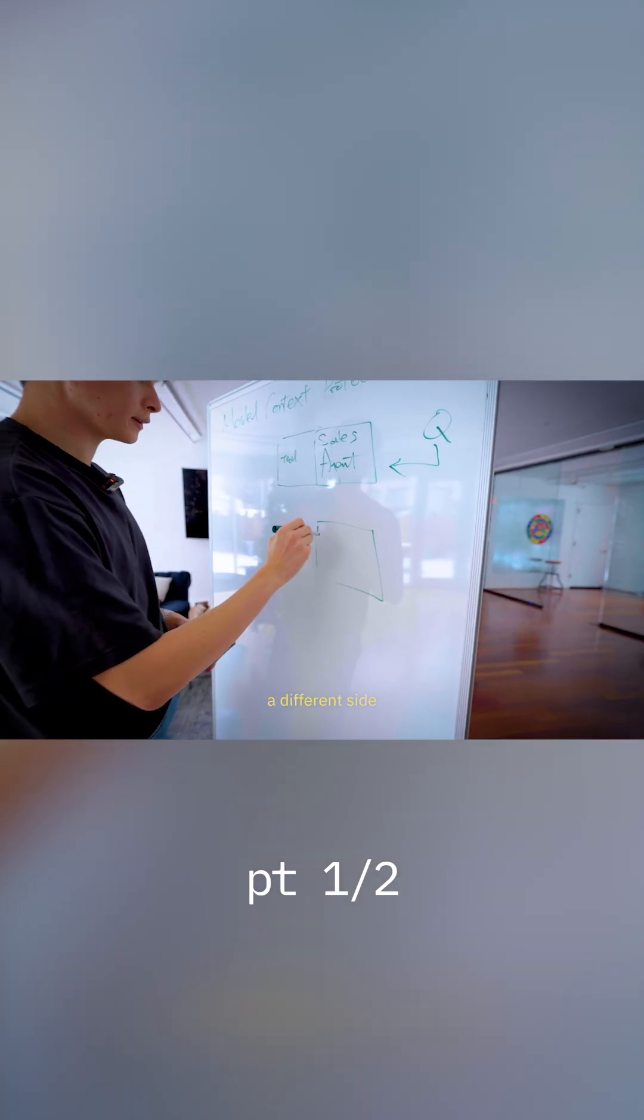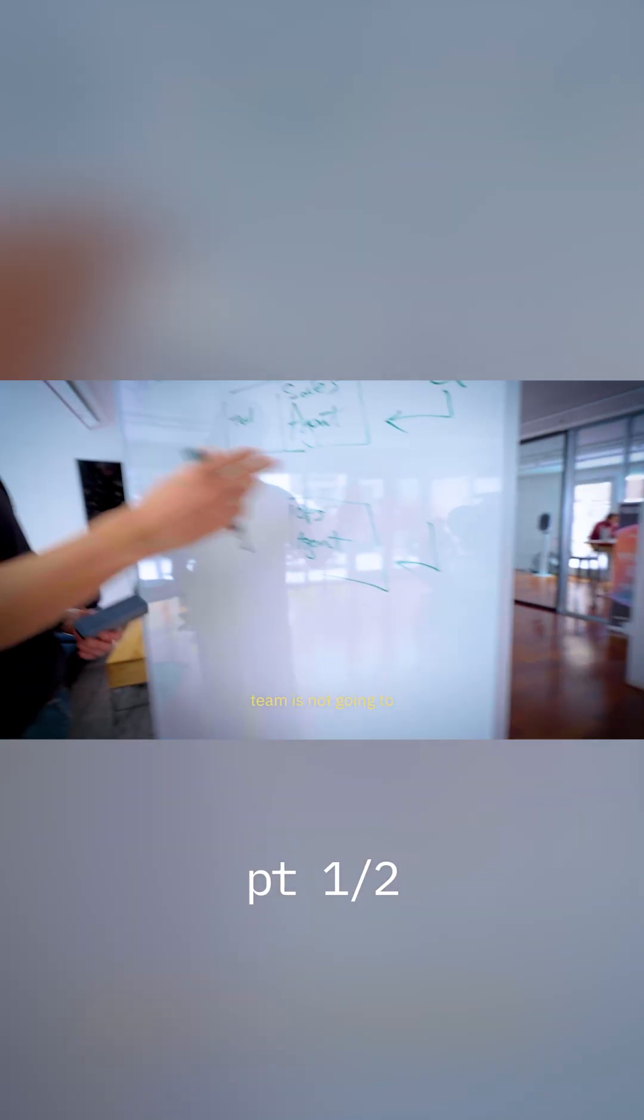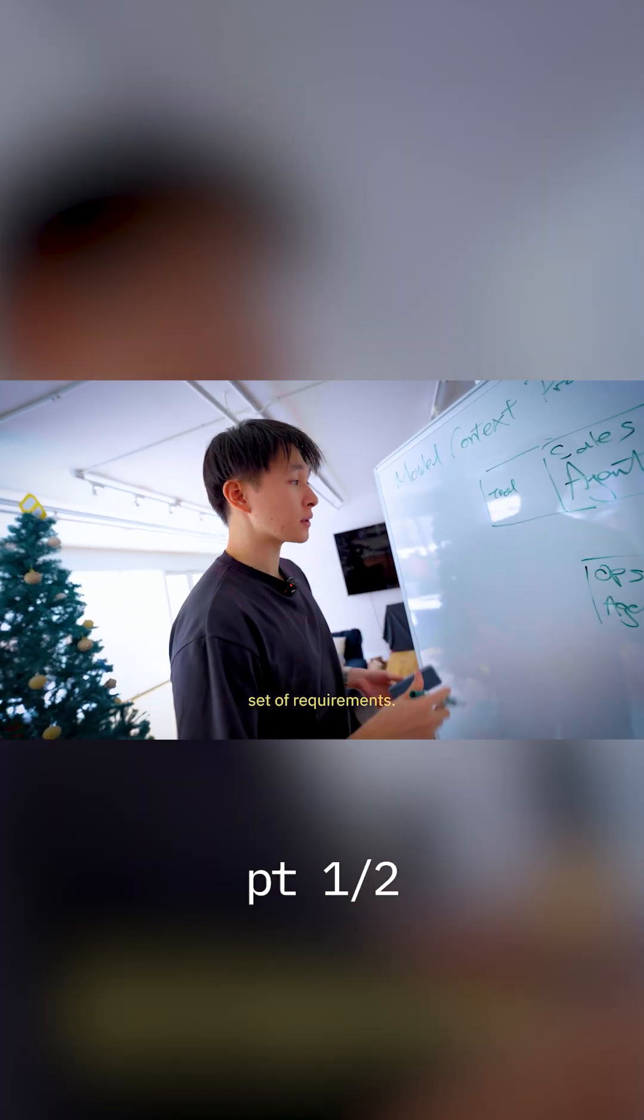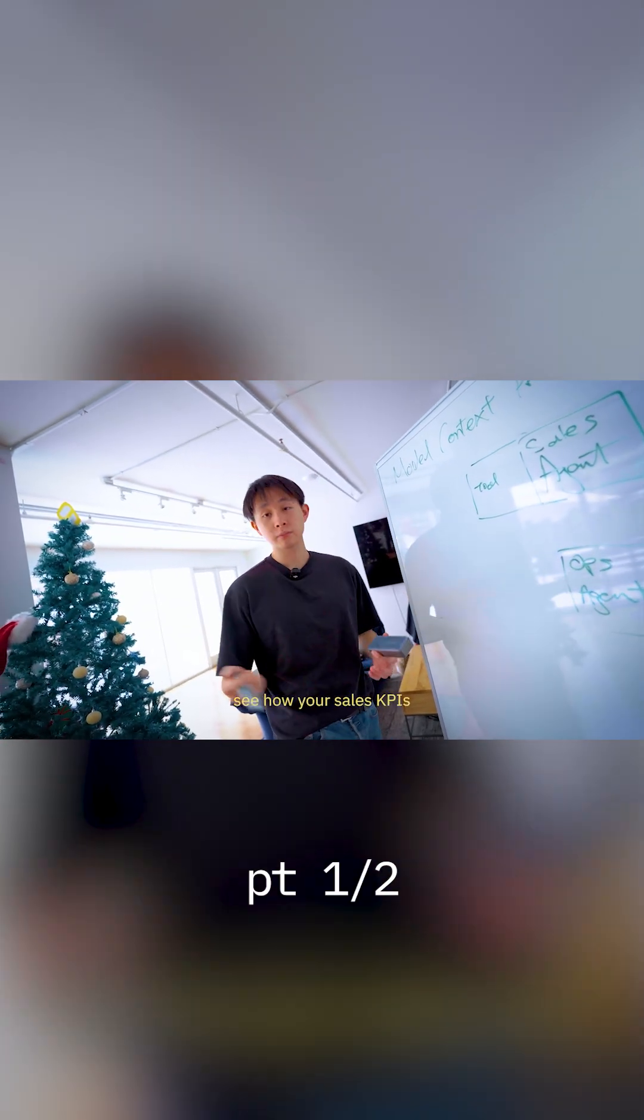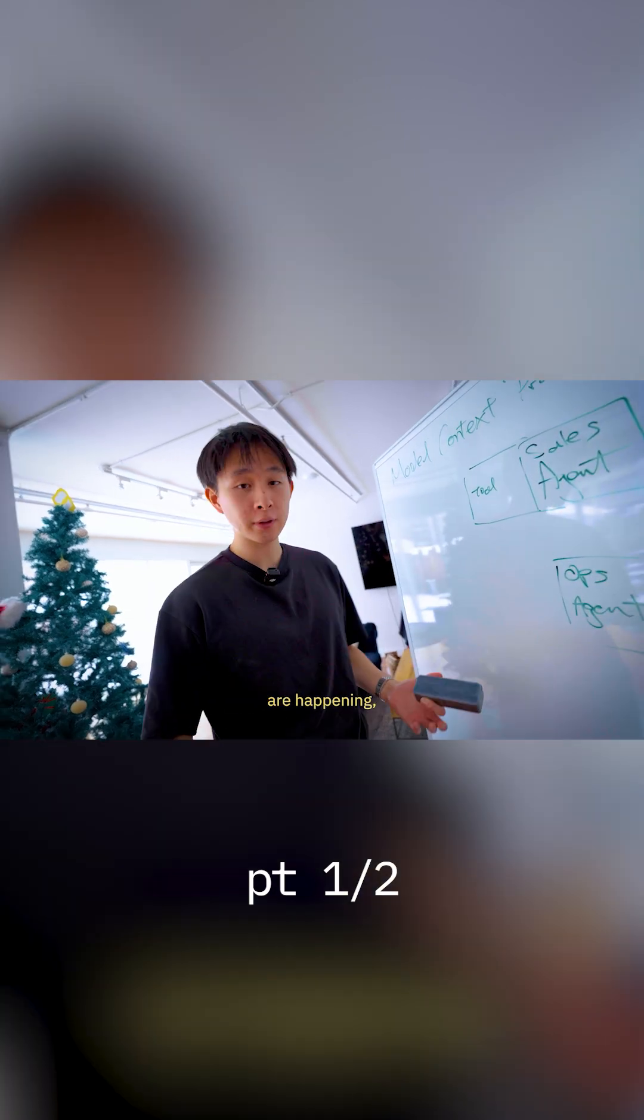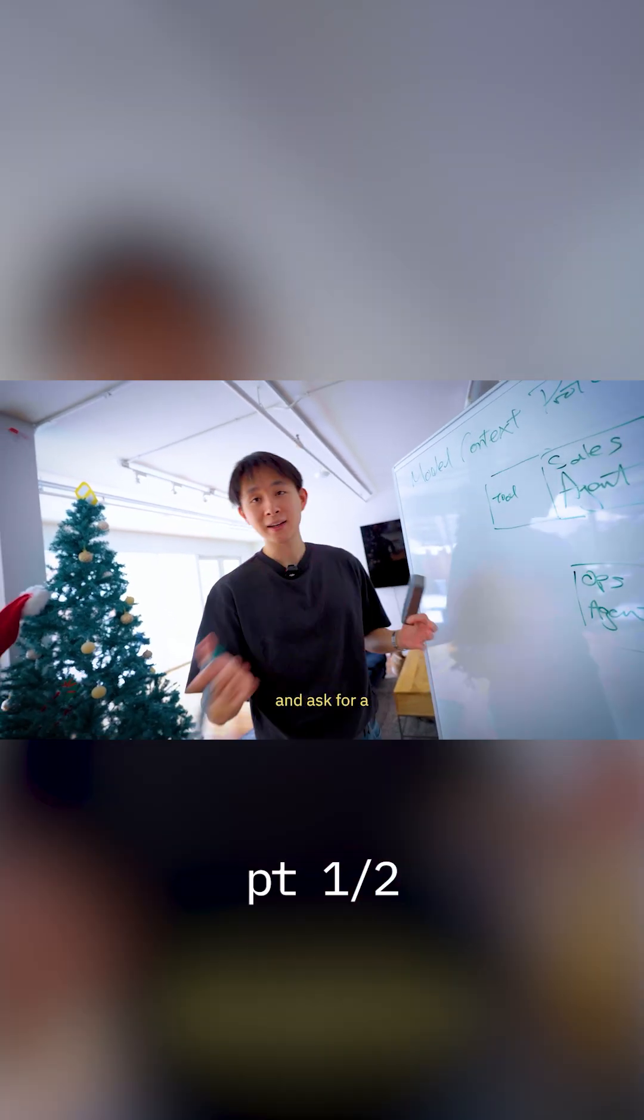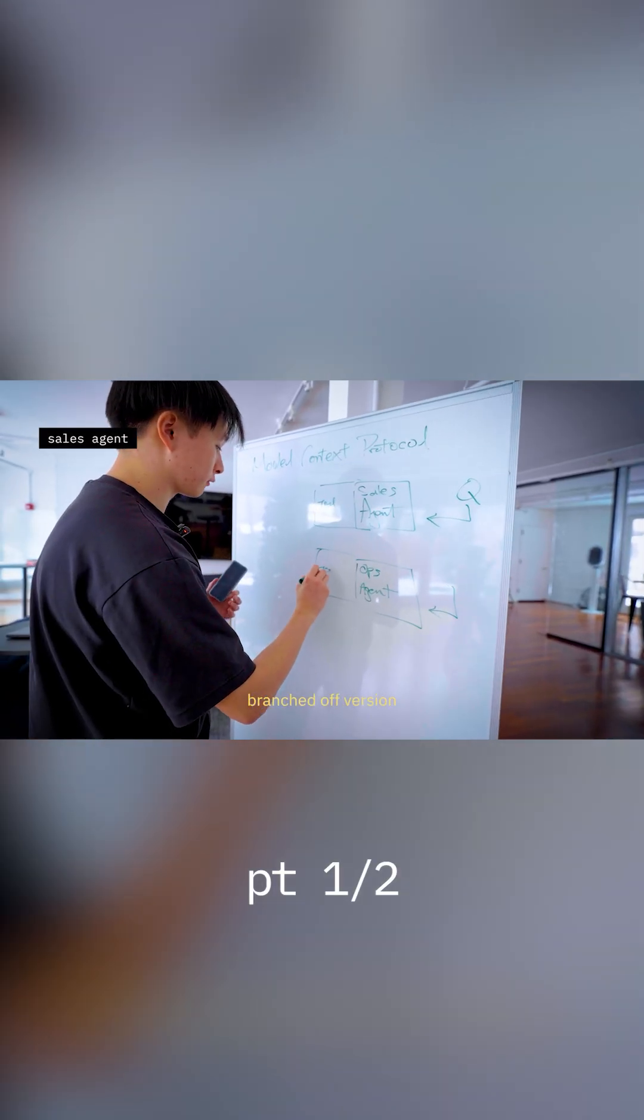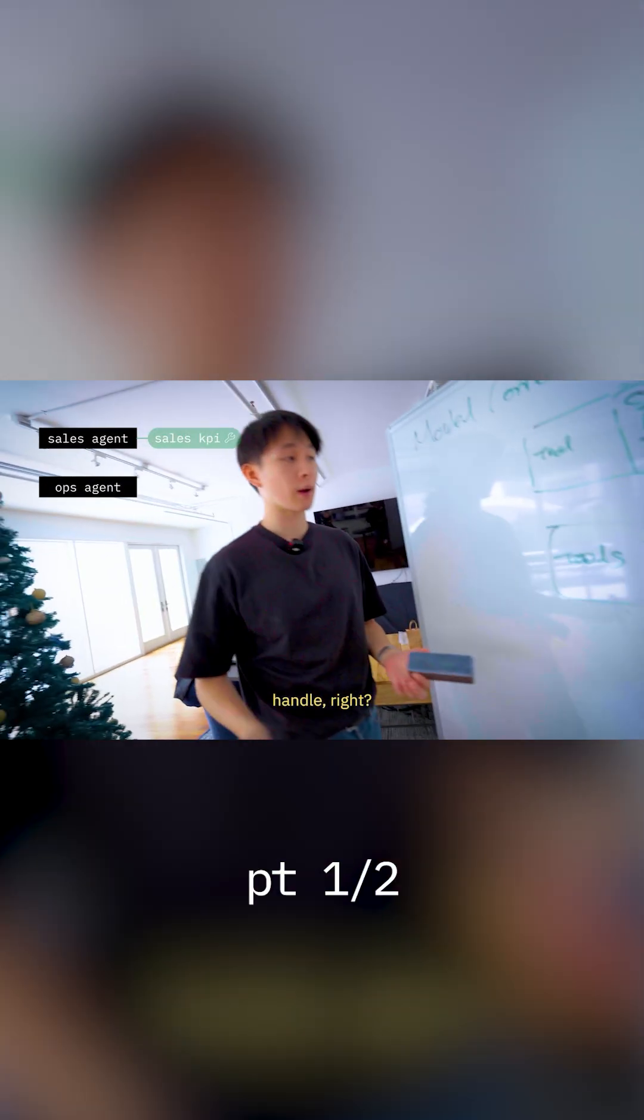Let's say we have a different side, an ops agent. The ops team is not going to use your system because they have a different set of requirements. However, they might need to see how your sales KPIs are happening and they will have to go to your department and ask for a copy of that code, implement that. Then you get a branched off version, which gets really messy to handle.